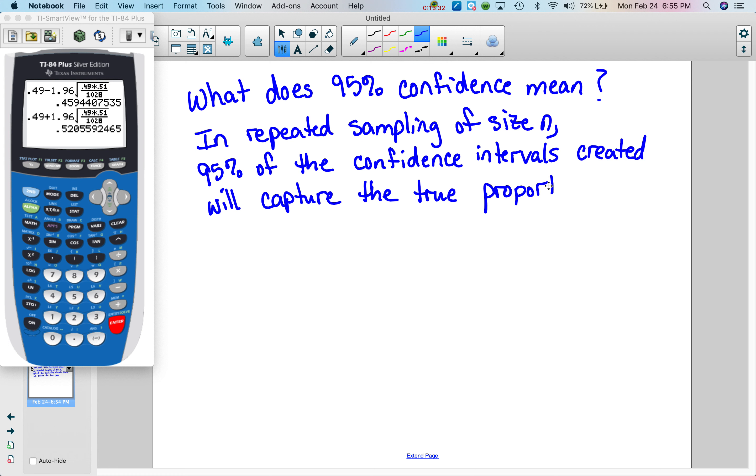But when we do means, we'll say mean. So the idea on this, in repeated sampling of size N, 95% of the confidence intervals created will capture the true proportion. We took a sample, we got a p hat value, and we created our confidence interval around it. If we drew another sample, we would get another confidence interval. It would be a different confidence interval. If we did a third sample, we would get a different p hat value, and we would have a different confidence interval. Every time we do a sample, we get a different confidence interval.